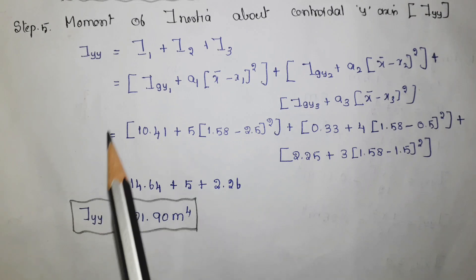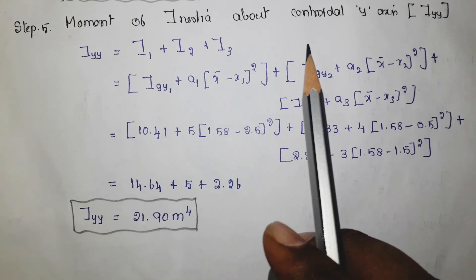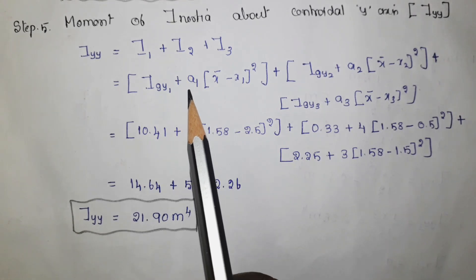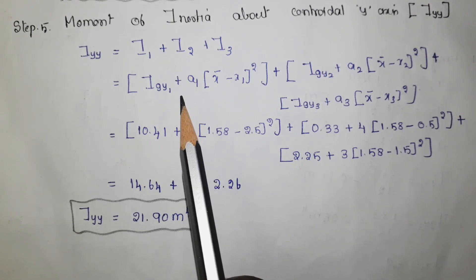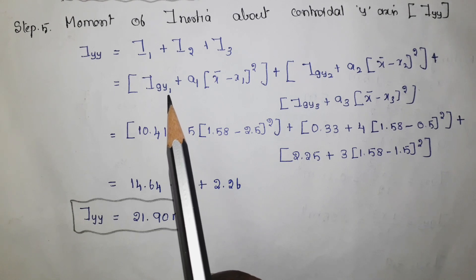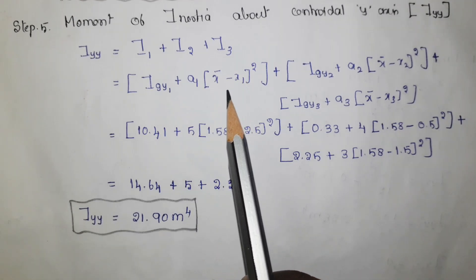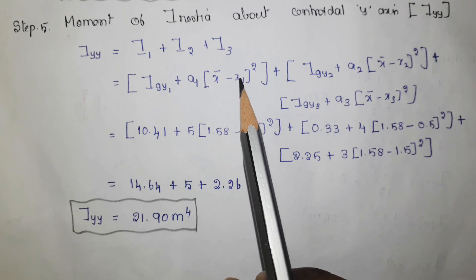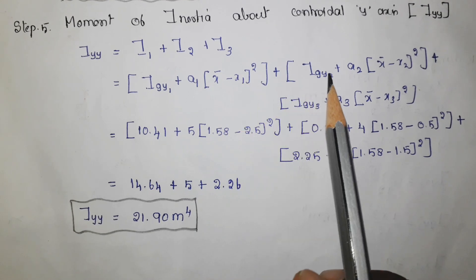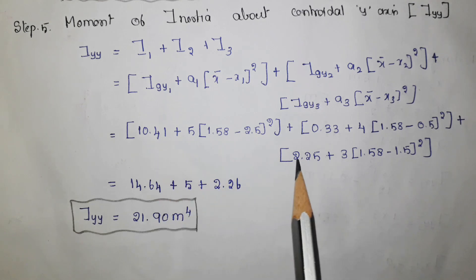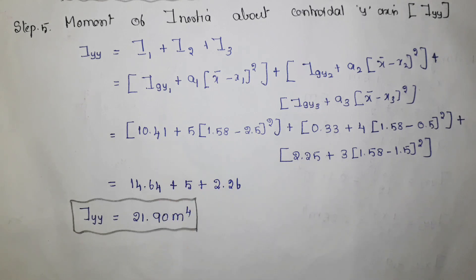Step 5 is finding the moment of inertia with respect to the centroidal y-axis, Iyy. Using the same step but instead of y, using the parallel axis theorem with x-bar minus x1 as the perpendicular distance. The same formula is repeated for the second and third rectangle. Substituting all values, the answer is 21.90 meter to the power 4.